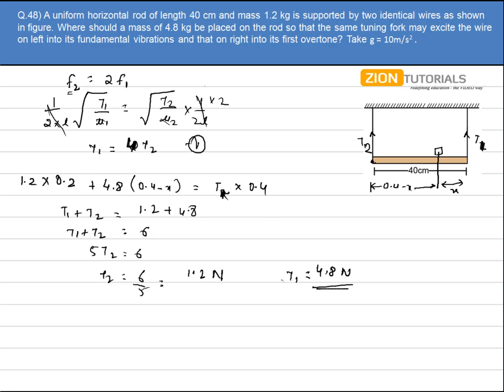So I do have a value of t1 now. Just substitute this t1 value over here that comes out to be 1.2 into 0.2 plus 4.8 into 0.4 minus x is equal to 4.8 into 0.4.